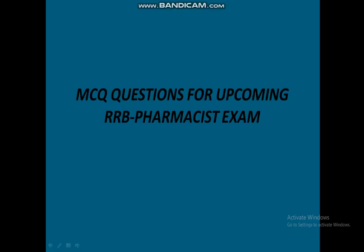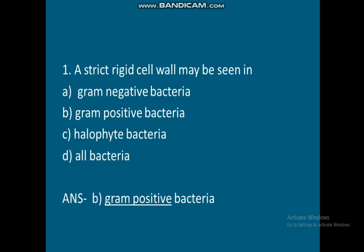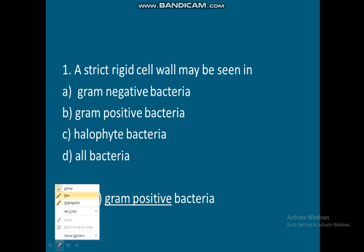MCQ Question 1: A strict rigid cell wall may be seen in which case? Option A: Gram-negative bacteria. Option B: Gram-positive bacteria. Option C: Halophyte. Option D: All bacteria. Correct answer is Option B — gram-positive bacteria.